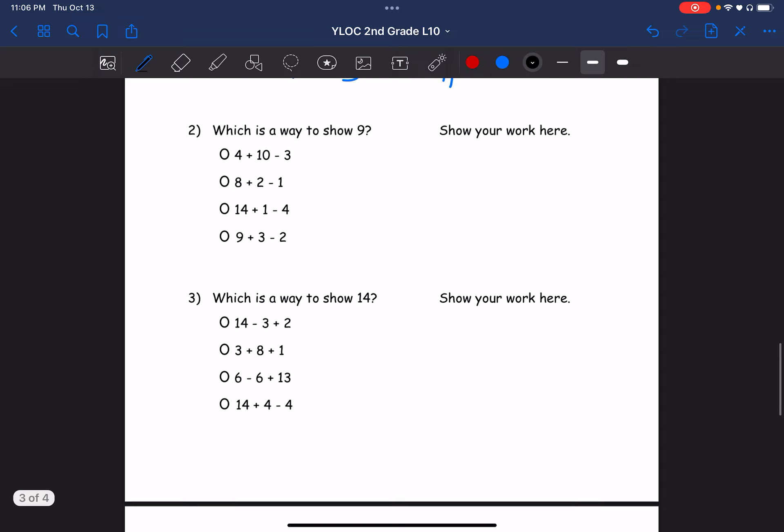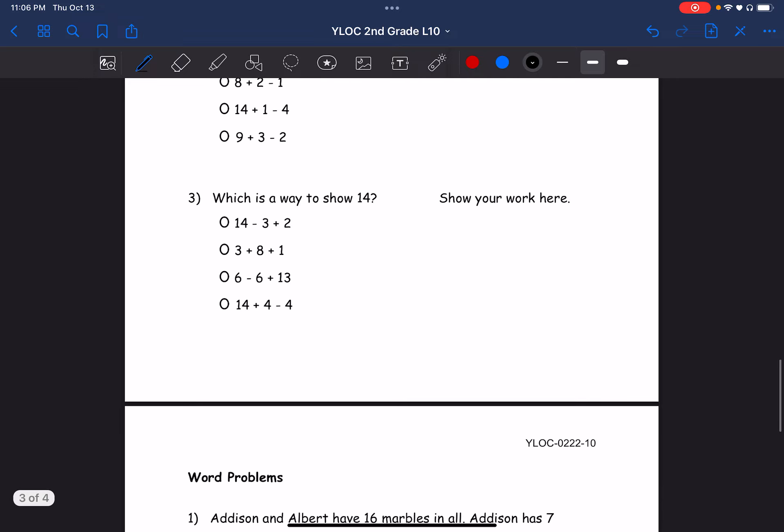Alright, this is number 3. What is a way to show 14? 14 minus 3 plus 2. We can do 14 minus 3, that's 11, and then plus 2 which equals 13, which is close but not the answer we're looking for. We see 3 plus 8 plus 1, so let's do this: 11 plus 1 equals 12, that's not the answer either.